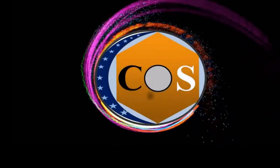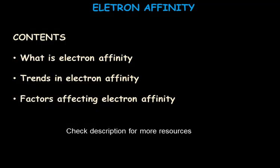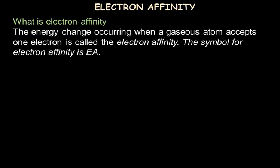It's chemistry and you are watching Gram Science. In this video we will understand what is electron affinity, what are the trends in electron affinity in the periodic table, and what are the factors affecting electron affinity values. Let's start by understanding what electron affinity is: the energy change occurring when a gaseous atom accepts one electron is called electron affinity, and its symbol is Ea.